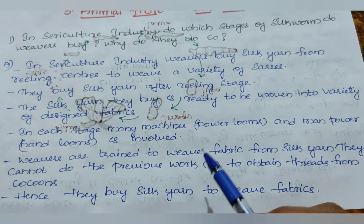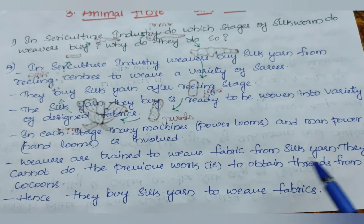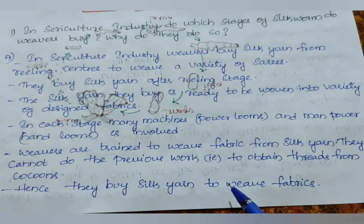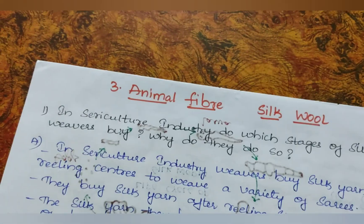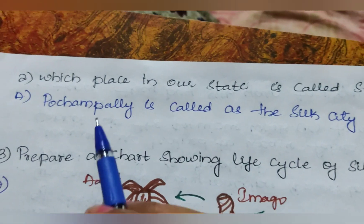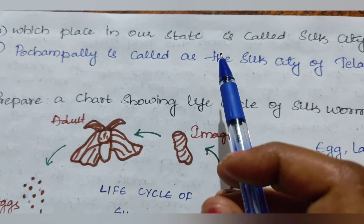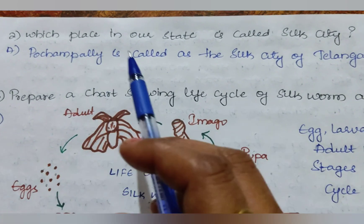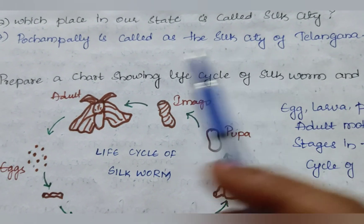Weavers cannot do the previous work — that is, the steps before the silk yarn stage. So to obtain threads from cocoon, they cannot do that. Hence they buy silk yarn to weave fabrics. The second question: Which place in our state is called Silk City? Pochampalli is called the Silk City of Telangana.